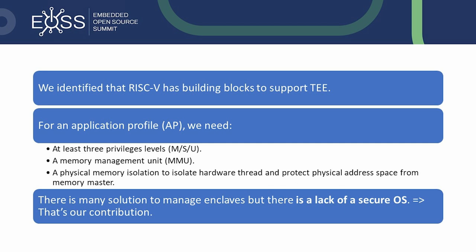The RISC-V specification defines several privilege levels. We have first the machine mode, which is mandatory and has low-level access to the machine, making it the highest privilege mode. Then we have the supervisor mode, which supports virtual memory, and the hypervisor for virtualization support. Then the user mode, which is the unprivileged lowest level. And finally, the debug mode available only to the manufacturer.